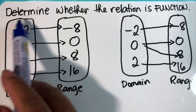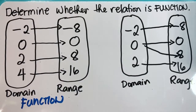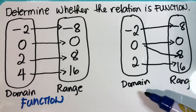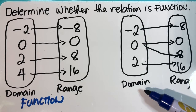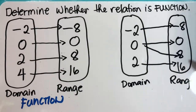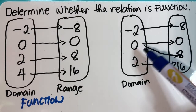Based on this, the relation is a function. Why? Again, because no values of x are repeated. How about example number two — is this relation a function? Let us identify if each element of the domain is paired with exactly one element of the range.